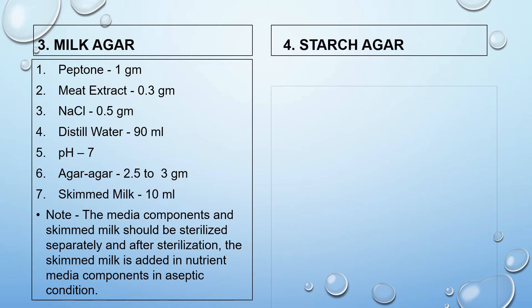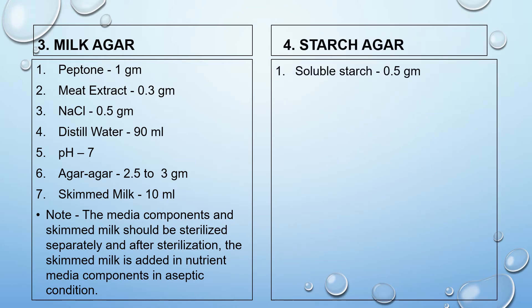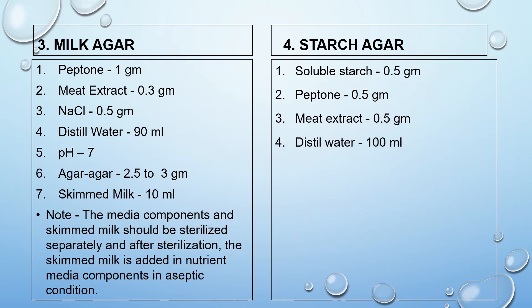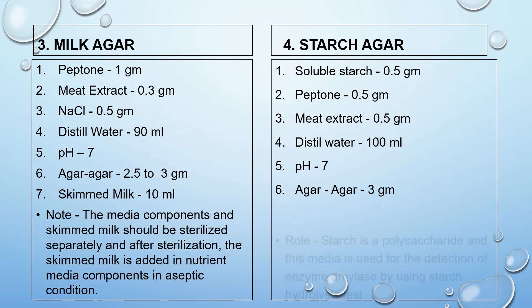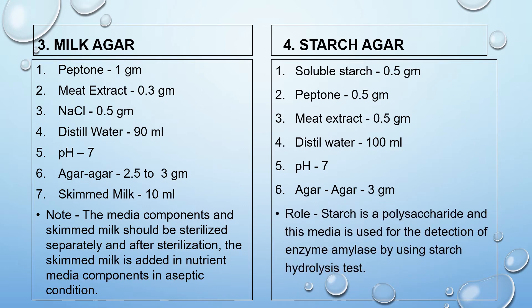The fourth is starch agar. Composition: soluble starch 0.5 gram, peptone 0.5 gram, meat extract 0.5 gram, distilled water 100 ml, pH 7, agar agar 3 gram. Role: starch is a polysaccharide, and this media is used for detection of the enzyme amylase by using the starch hydrolysis test.